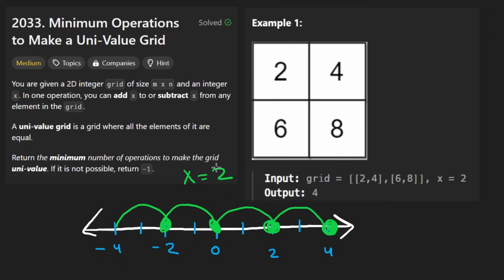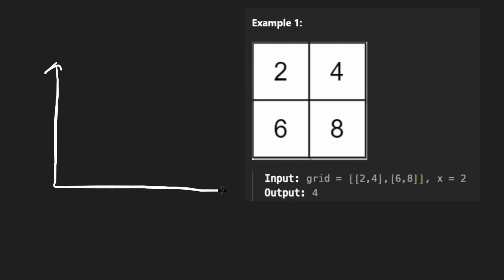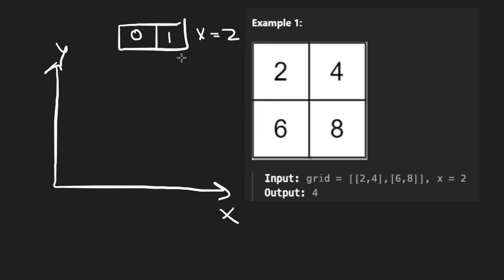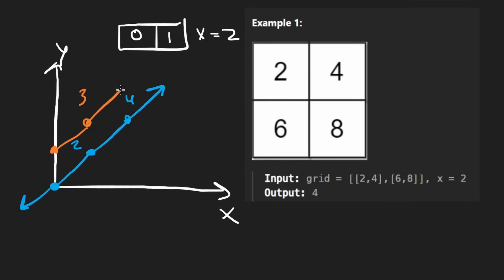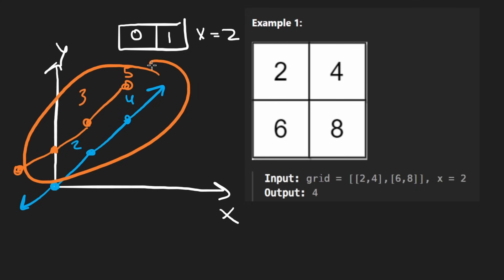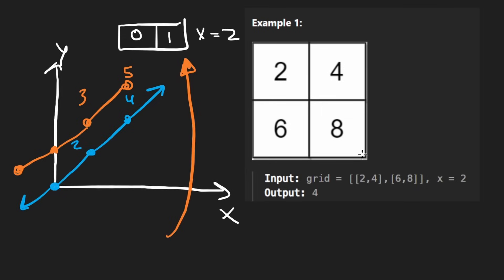Another way to think about this: imagine an x-y axis. Starting at 0, since we're not applying x at all, and then we can move to 2, 4, and draw that line. Starting from 1, we get 3, 5, and so on. You can think of this as a system of linear equations — the two lines are parallel and never meet.